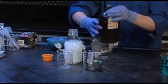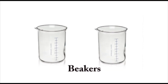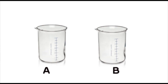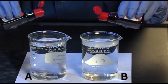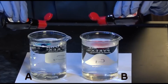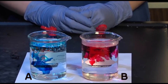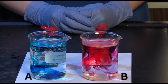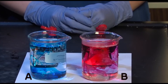Let's look at the following experiment on how temperature affects the rate of diffusion. To conduct the experiment, prepare two beakers. Prepare blue and red color food dyes. Label the beakers as A and B. Add cold water in beaker A and hot water in beaker B. Add blue color food dye in beaker A and red color food dye in beaker B at the same time. As you can see, the red food dye in hot water is diffusing faster than the blue food dye in cold water. This indicates the rate of diffusion increases at high temperature.